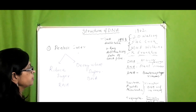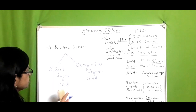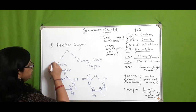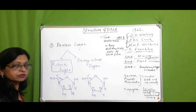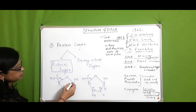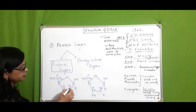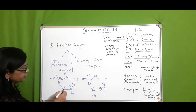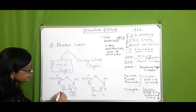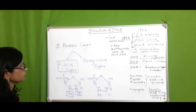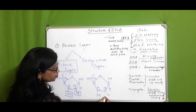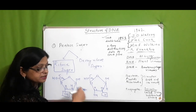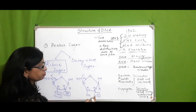What is the difference between ribose sugar and deoxyribose sugar? In ribose sugar, it is a five-carbon compound, and you can see that both the second carbon and the third carbon have an OH group. But in deoxyribose sugar, the second carbon has only an H — the OH is replaced by H, meaning one oxygen less.